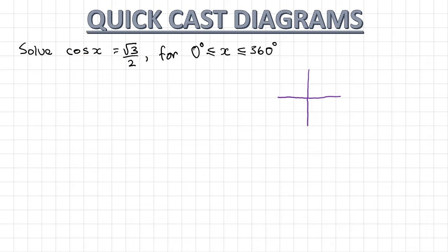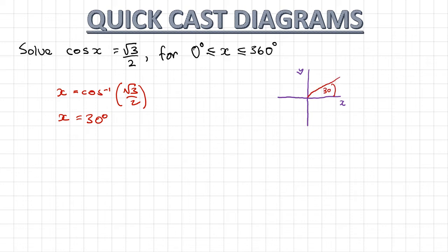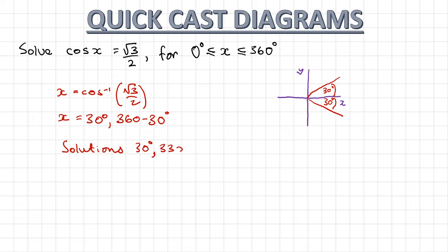Here I want to solve this trig equation. I've drawn my x and y axis. The first thing I do is take the cos inverse of both sides, giving x equals the cos inverse of root 3 over 2. That gives me exactly 30 degrees. I draw 30 degrees on my cos diagram. Because it's cos, I reflect that in the x axis — so this is also 30 degrees. The other solution is 360 minus 30 degrees, giving final solutions of 30 degrees and 330 degrees.